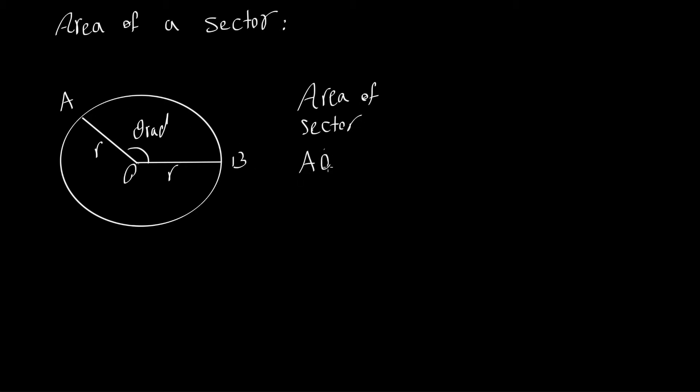To find the area of sector AOB, we know this region is a fraction of the area of the circle. What fraction is it? θ out of the whole, which is 2π. So the area will be equal to θ/2π times the area of the circle, which is πr².